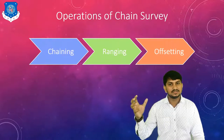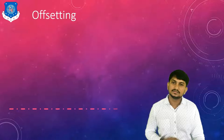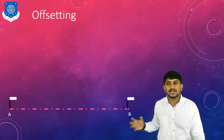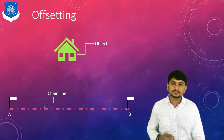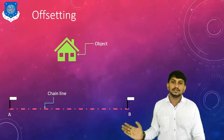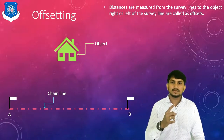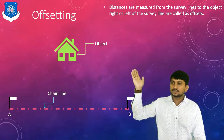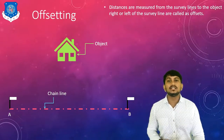This is all about ranging. Now let's discuss the third operation, which is offsetting. Suppose there is a chain line with two stations A and B, and there is one object. The distance measured from the survey line to the object is called an offset. The method of taking offsets is called offsetting.